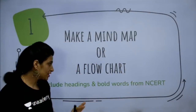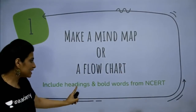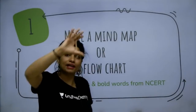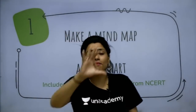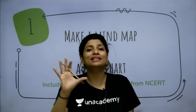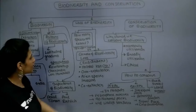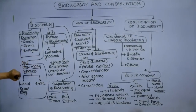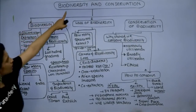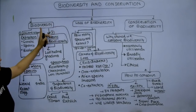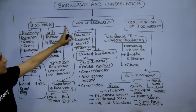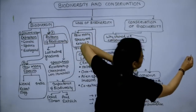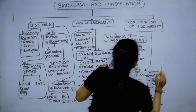You should have a flow chart of the headings and bold words. The important things should be in the mind map. For example, in Biodiversity and Conservation, there are three main topics: Biodiversity, Loss of Biodiversity, and Conservation of Biodiversity.